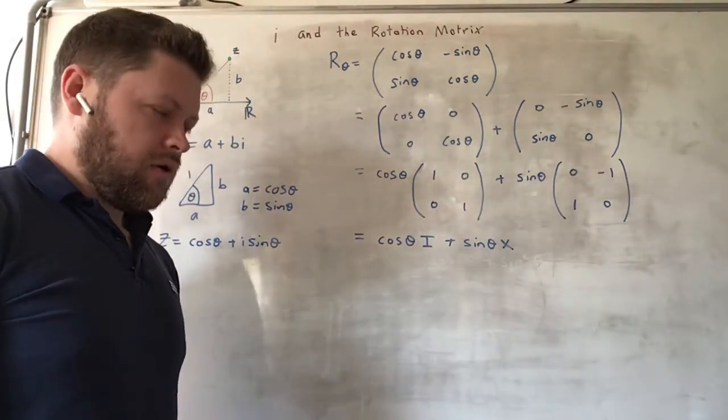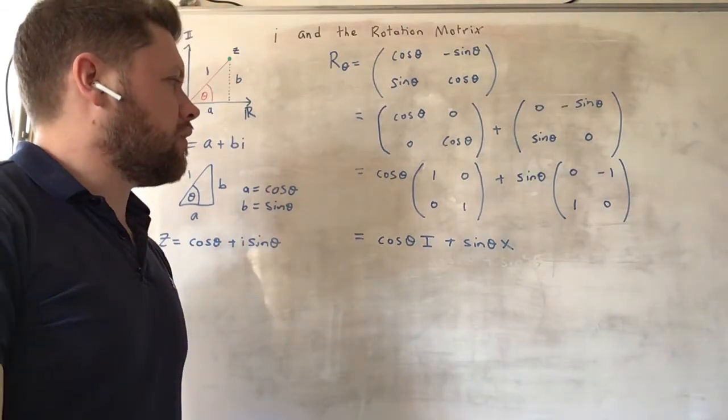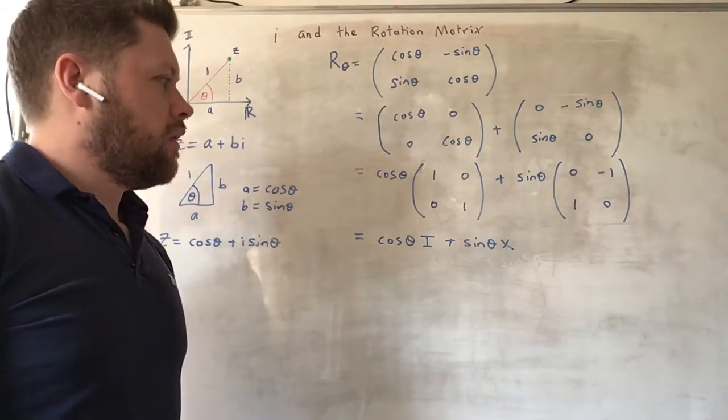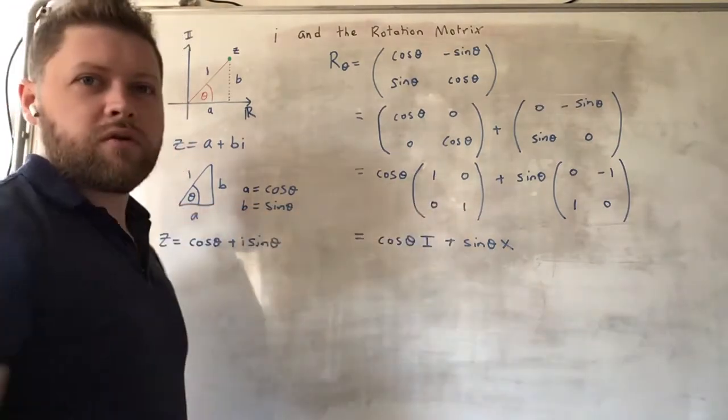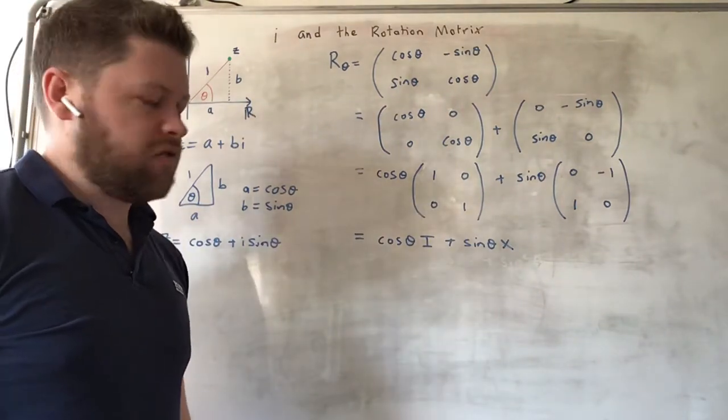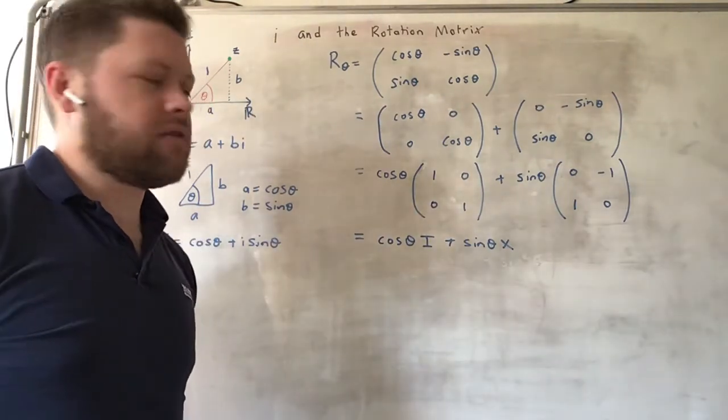So we might ask, in fact, what is X? I is obviously the identity, the do-nothing transformation matrix. But what is this one, X, over here?